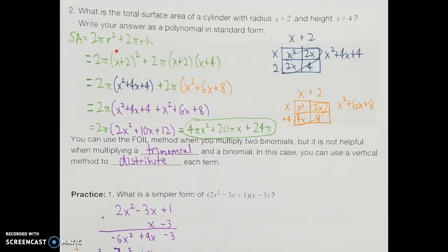Looking to simplify, that means I need to simplify x plus 2 squared, which really means I'm doing x plus 2 times x plus 2. Using the table method: x times x gives x squared, 2 times x is 2x, 2 times x again is 2x, and the last box is 2 times 2 which gives 4. Combining like terms, that first product should be x squared plus 4x plus 4. So instead of having x plus 2 squared, after multiplication we have x squared plus 4x plus 4.